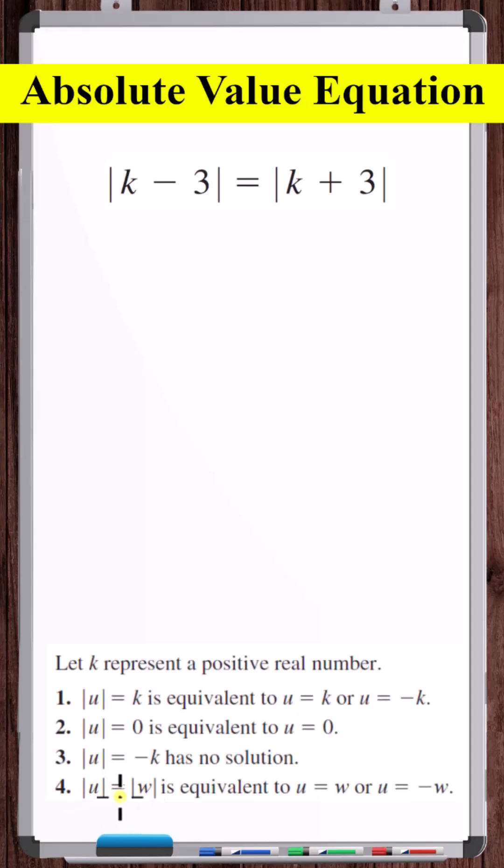U and W are two variable expressions. The absolute value of U equals the absolute value of W is equivalent to U equals W or U equals minus W. So this is U and this is W. We have U equals W or U equals minus all of W.